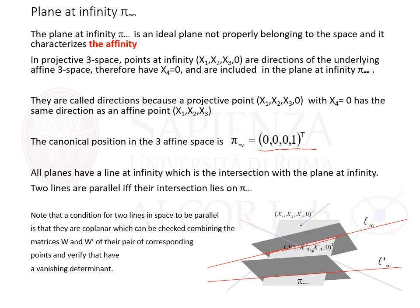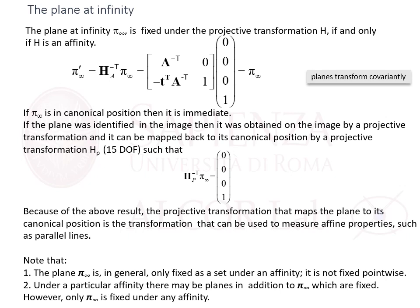Lines intersect the plane at infinity at a direction. We can note that a condition for two lines in space, determined by two pairs of points, to be parallel is that they are coplanar, which can be checked by combining their matrices W and W' — as seen in the last video — and verifying that this matrix has a vanishing determinant. When the plane at infinity in the world is identified — which might be difficult but not impossible — it is possible to determine the affine geometry of the world.